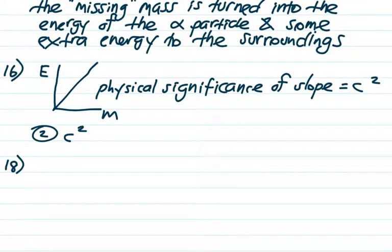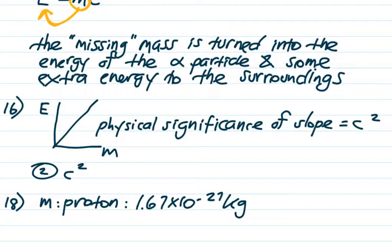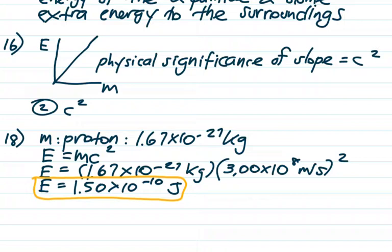Number 18: what's the energy equivalent in joules of the mass of a proton? Look up the rest mass of the proton on the front page of the reference tables — 1.67 times 10 to the negative 27 kilograms. As a side note, the proton and neutron have the same mass to three significant figures in kilograms, both 1.67 times 10 to the negative 27, but their masses in universal mass units are actually different. E equals mc squared with the proton mass gives 1.5 times 10 to the negative 10 joules.